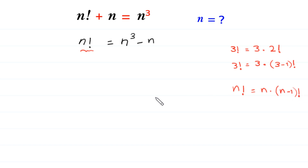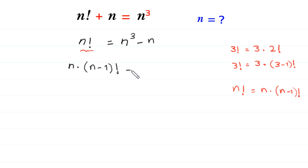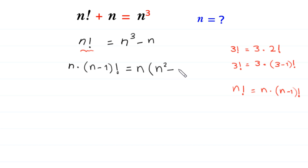So we replace n factorial with n times (n minus 1) factorial. Then n times (n minus 1) factorial is equal to n cubed minus n, and from n cubed minus n we can take n as common, giving n times (n squared minus 1).